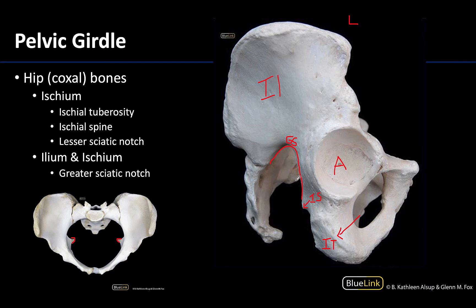The pudendal nerve will actually exit the pelvis through the greater sciatic notch but then will almost immediately head back into the pelvic or perineal region through the lesser sciatic notch. This lesser sciatic notch is between the ischial spine and the ischial tuberosity, and you can see how the greater sciatic notch is quite a bit larger than the lesser sciatic notch. The pudendal nerve, entering the pelvic region through the lesser sciatic notch, is the primary innervation of the perineum.